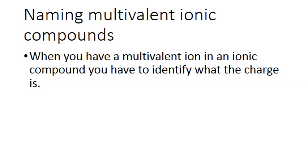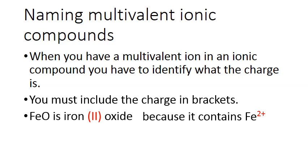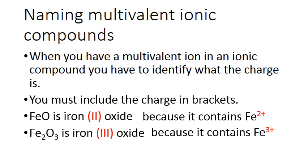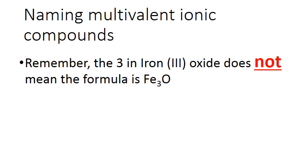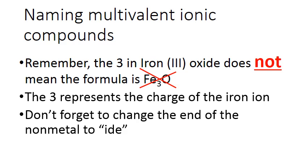Now let's look at how we need to name these multivalent ionic compounds. When you have a multivalent ion in an ionic compound, you have to identify what the charge is for that multivalent ion, and you need to include the charge in brackets. For example, FeO is iron(2) oxide because it contains Fe2+. Fe2O3 is iron(3) oxide because it contains Fe3+. Remember that the 3 in iron(3) oxide does not mean the formula is Fe3O — that's a common mistake. The 3 represents the charge of the iron ion. And don't forget to change the end of the nonmetal to -ide.